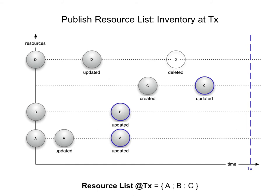Going back to our overview of the evolution of resources at the source: if the source publishes a resource list at time X, we look at the state of the resources at that moment. C's current state will be included; D will not because it was deleted. We don't include old states in the inventory, only the most recent states of A and B. So the resource list at TX will list resource A, resource B, and resource C.